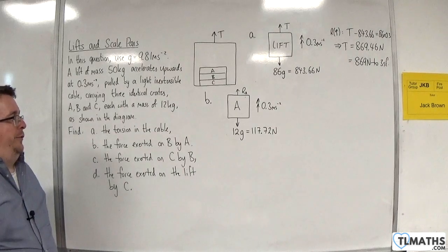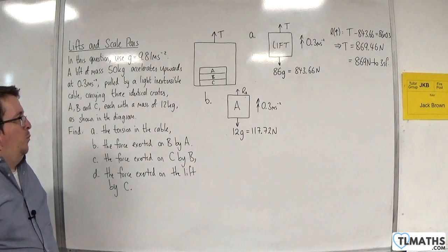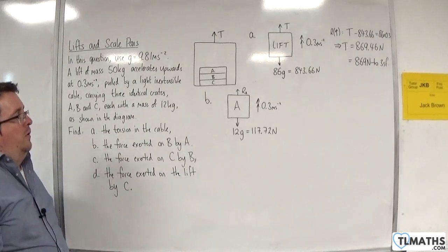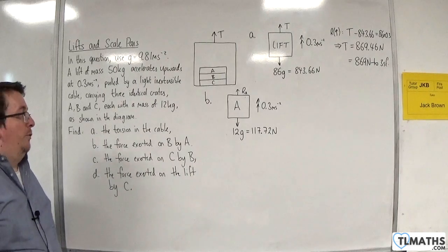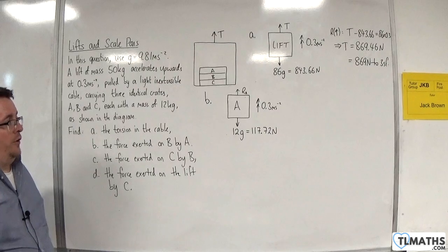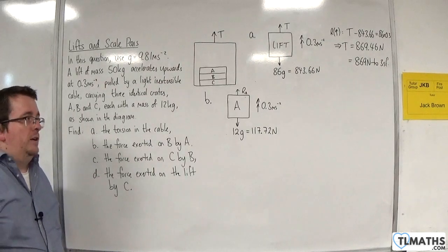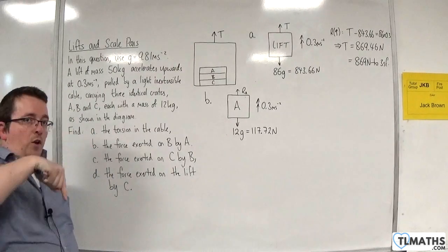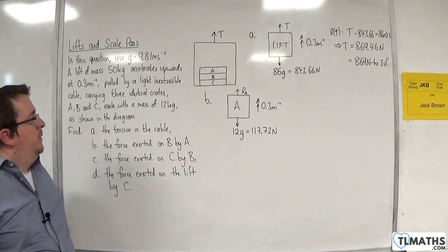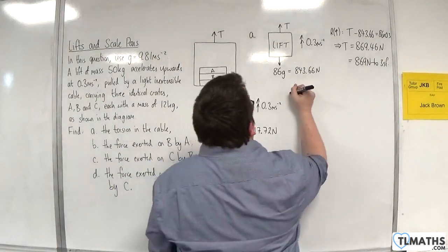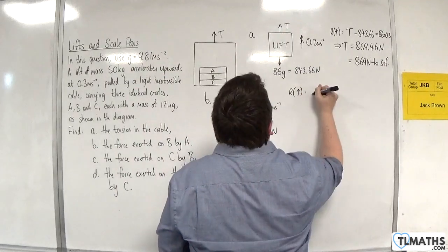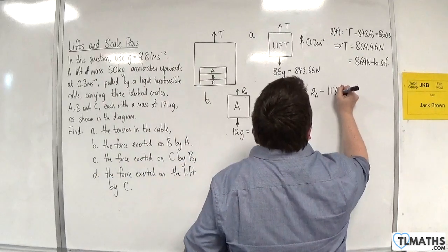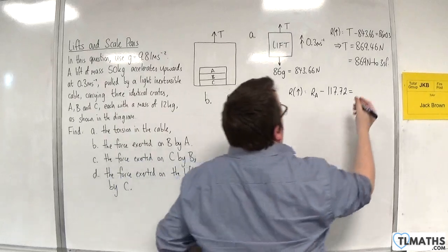Now, the normal reaction force that I calculate here will actually be the force that will be pressing down on particle B. That's what it will feel like. Because those forces are going to have to be equal and opposite. Because A is not flying off into the air, A is not sinking into the ground, and so that is what the force will be acting on particle B below it. So, resolving upwards, as we did before, we've got the normal reaction force at A take away the weight, 117.72, is going to be equal to the mass, 12, times the acceleration, 0.3.